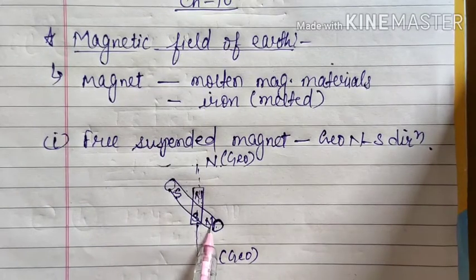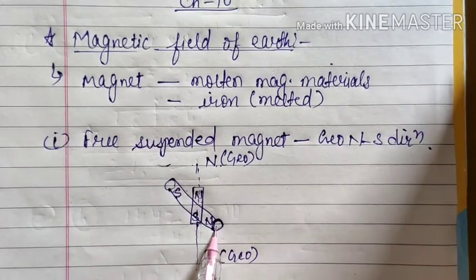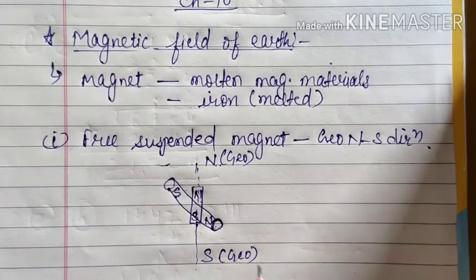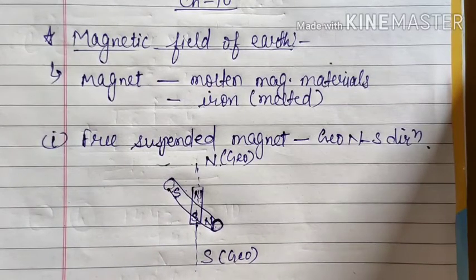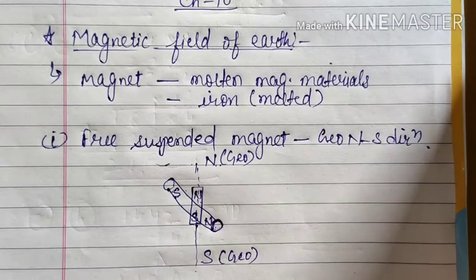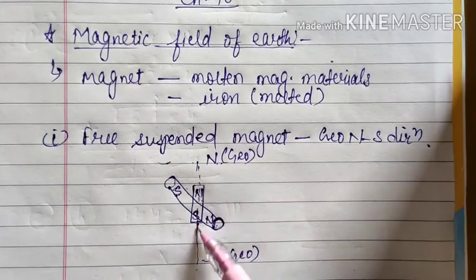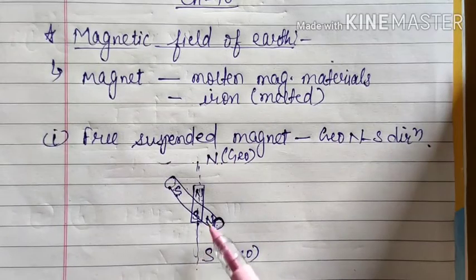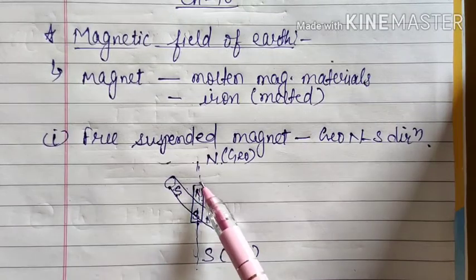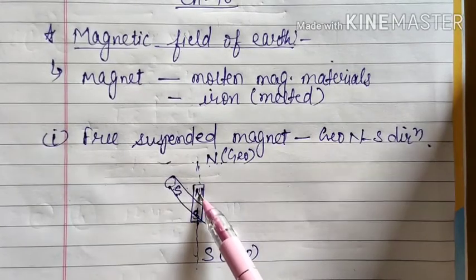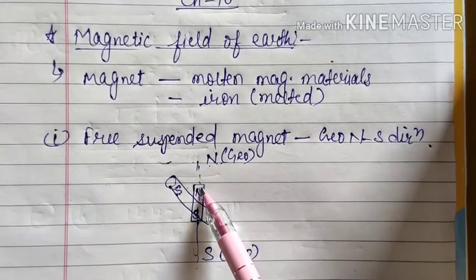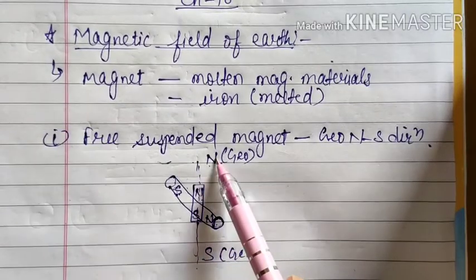Similarly, there will be attraction between the north pole of the earth's magnet and the south pole of the bar magnet. So whenever we put a magnetic compass or suspend a bar magnet freely with a thread, it always shows the geographic north-south direction and comes to rest there. It is possible only if there is another magnet having its south pole towards geographic north, and because of this south pole our bar magnet's north pole is attracted towards it and becomes stable towards geographic north.